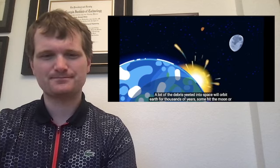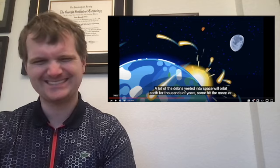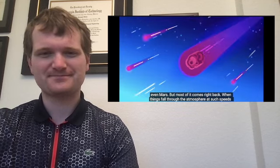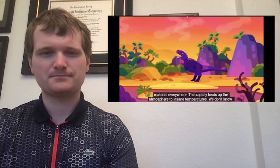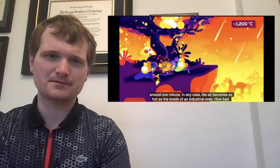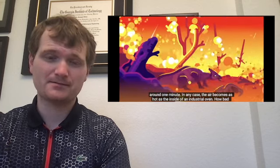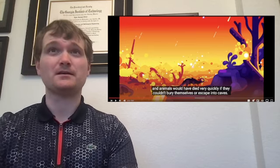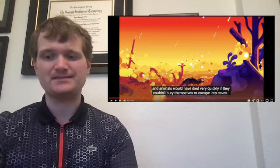A lot of the debris yeeted into space will orbit Earth for thousands of years. Really? Yeet? But most of it comes right back. When things fall through the atmosphere at such speeds, they get very hot. As in hundreds of degrees hot. And this happens to millions of tons of material everywhere. This rapidly heats up the atmosphere to insane temperatures. We don't know exactly how hot it got or how long this heat shock lasted, but there are two ideas here. Either the air was heated to hundreds of degrees for a few minutes or two thousands of degrees for around one minute. In any case, the air became as hot as the inside of an industrial oven. How bad the global effects of this were is contested, but if enough heat reached the surface, a lot of plants and animals would have died very quickly if they couldn't—Is that everywhere? I guess it would if you're talking all the re-entered ejecta from the impact. That's crazy.